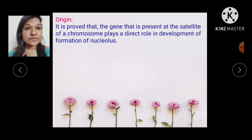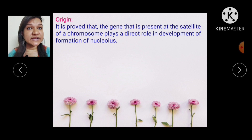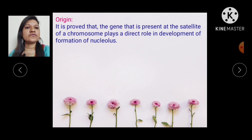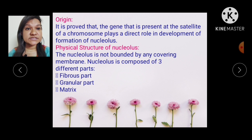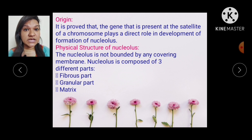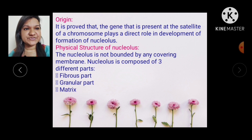The gene present at the satellite of a chromosome plays a direct role in the formation of the nucleolus. The physical structure of nucleolus: it is not bounded by any covering membrane and is composed of three parts — fibrous part, granular part, and matrix.